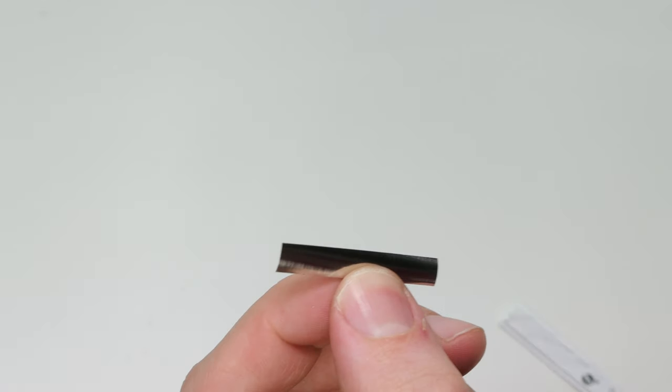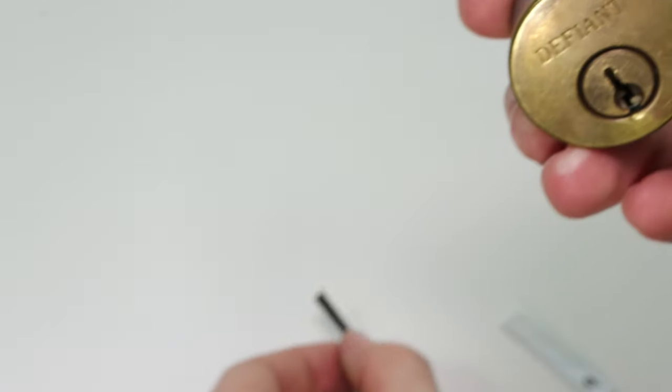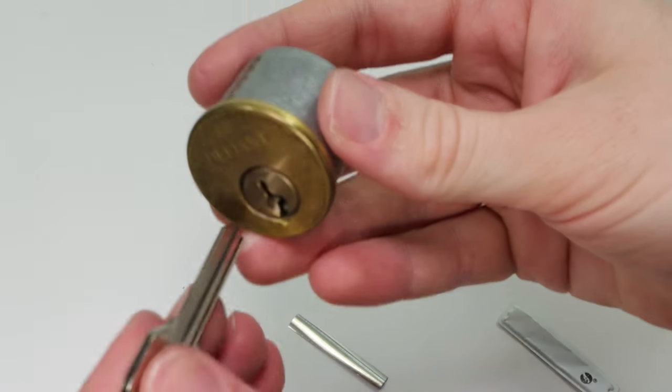What a core shim can do is it can make it so that you can take a lock like this one. You can insert a key blank like this.